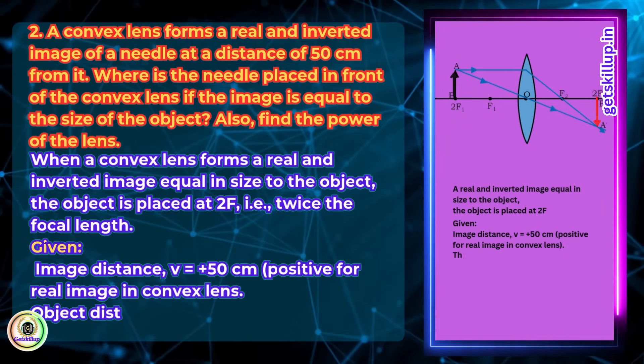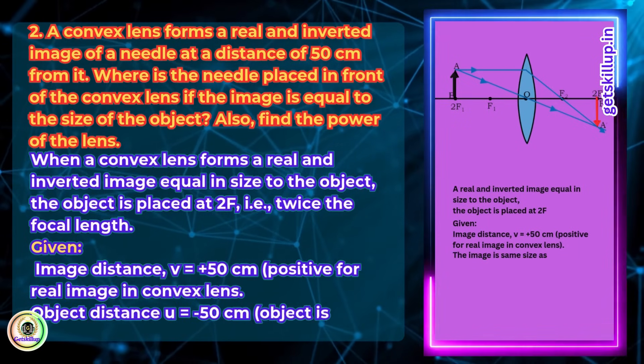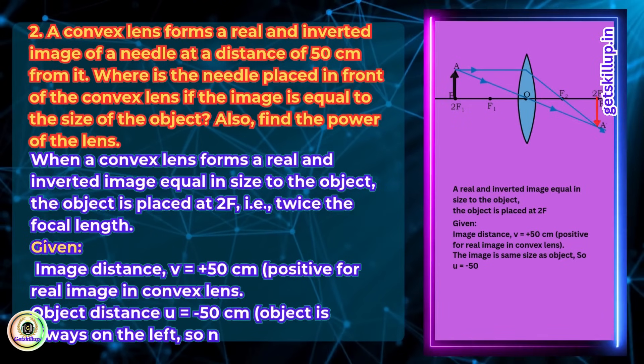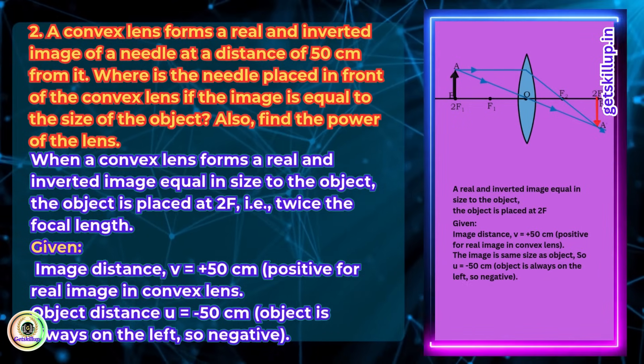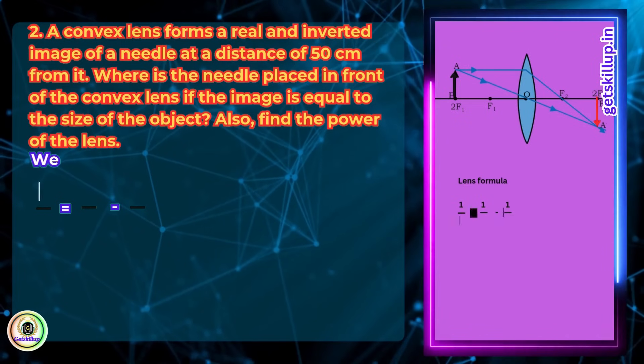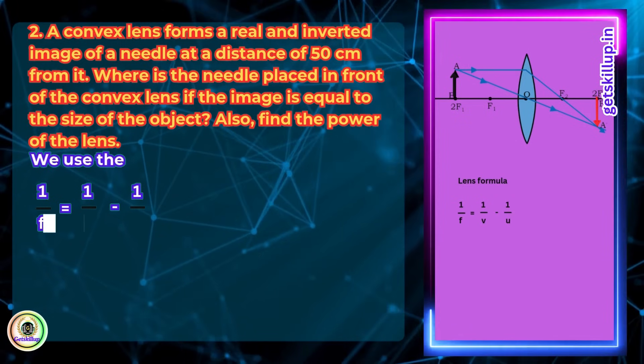Since the image is same size as object, object distance u = -50 cm (object is always on the left, so negative). We use the lens formula: 1/f = 1/v - 1/u.